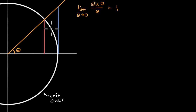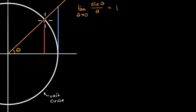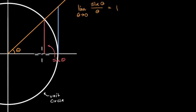What does the length of this salmon colored line represent? The height of this line is the y-coordinate of where this radius intersects the unit circle. By the unit circle definition of trig functions, the length of this line is sine of theta. To ensure it also works for thetas in the fourth quadrant, we use the absolute value of sine of theta.